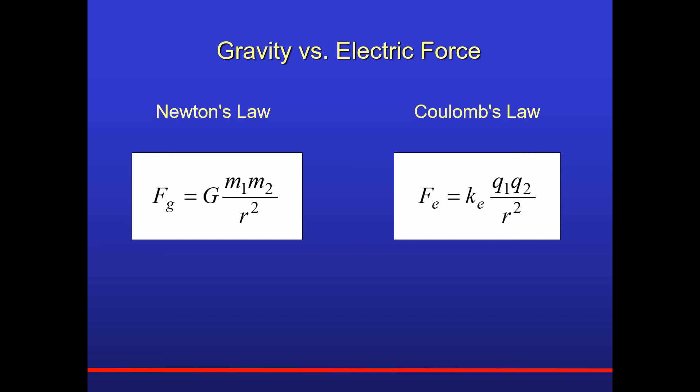Coulomb's law, you have a constant, k sub e, q1, q2, divided by the separation r squared. Very similar. Gravitational law, proportional to each mass. Coulomb's law, proportional to each charge. And they're both divided by the separation between the two objects r squared.